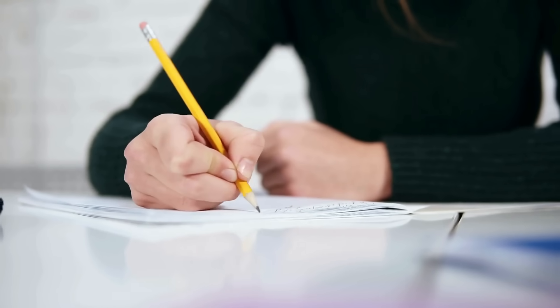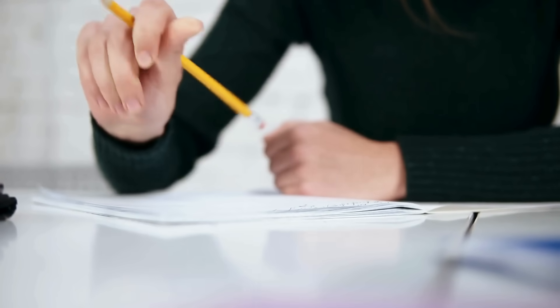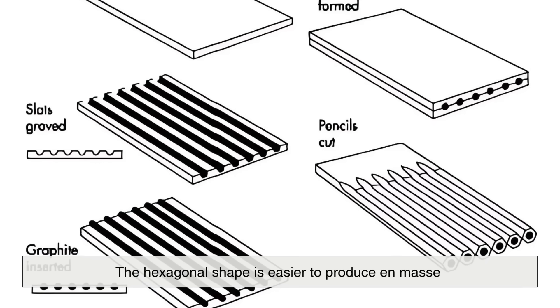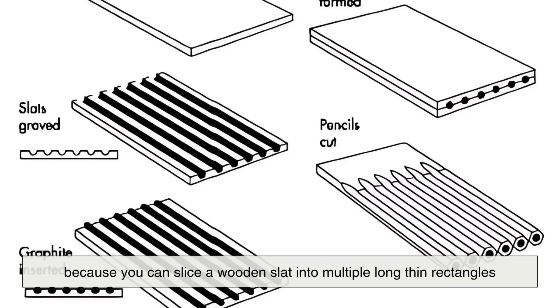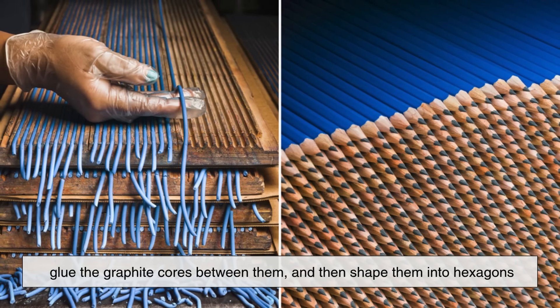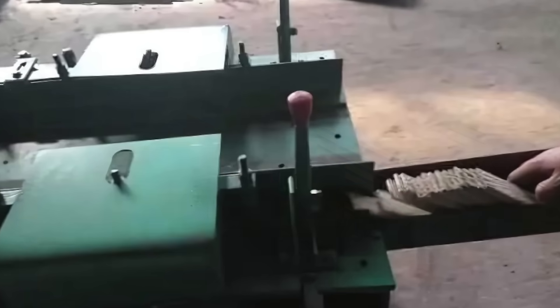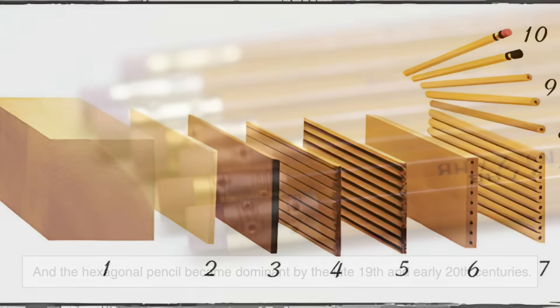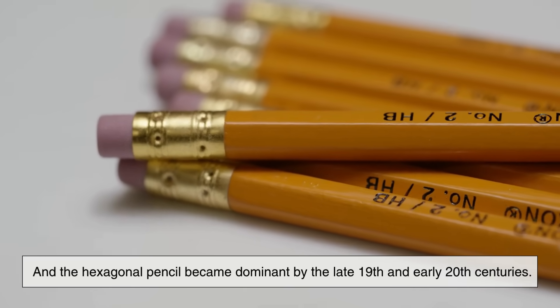But it wasn't just the user's comfort that drove this shift. It was also about manufacturing and economics. The hexagonal shape is easier to produce en masse because you can slice a wooden slat into multiple long thin rectangles, glue the graphite cores between them, and then shape them into hexagons using a grooved mold or cutting device. This process, known as pencil slatting, became the industry standard, and the hexagonal pencil became dominant by the late 19th and early 20th centuries.